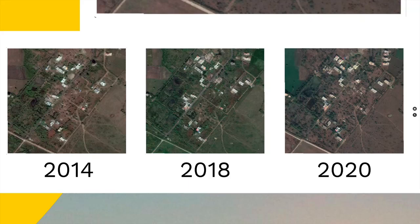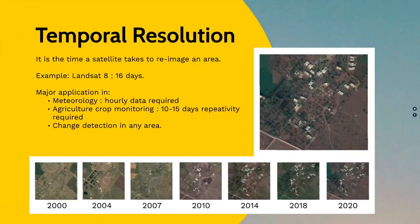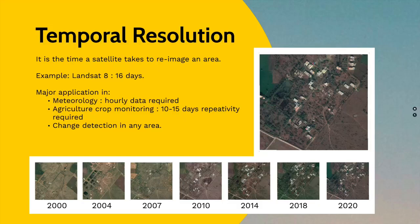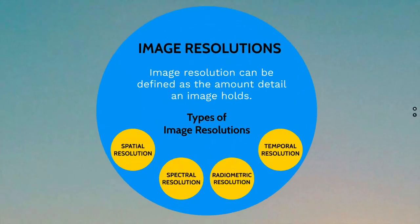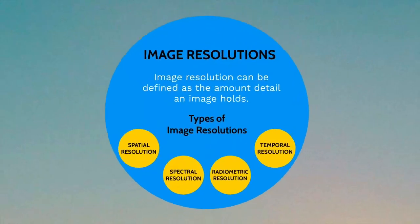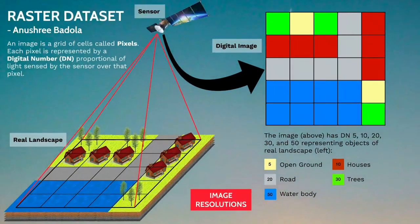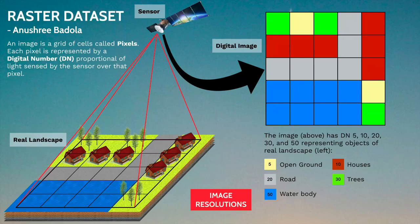This explains how temporal data could be useful for change detection. That concludes how image data is captured in raster data format and how the four different image resolutions are important to know before selecting any data for analysis.